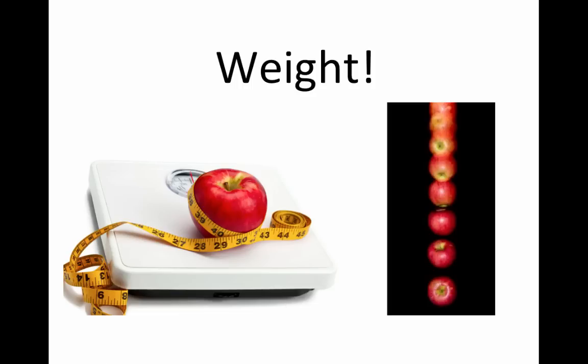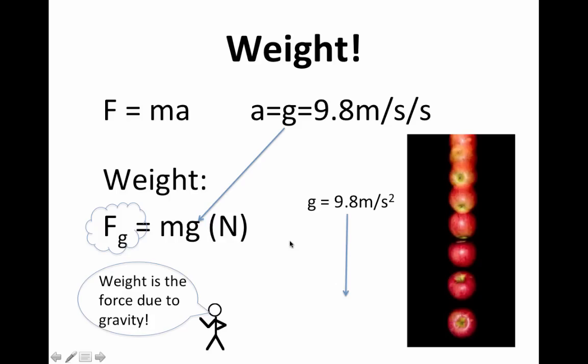Weight. To examine what weight is, let's start with Newton's second law of motion. Force equals mass times acceleration. On the surface of the Earth, if you drop an object, it's going to accelerate at 9.8 meters per second per second. And so we have a special letter for that, little g. If we replace the a, the acceleration in Newton's second law with g, then we get the weight.